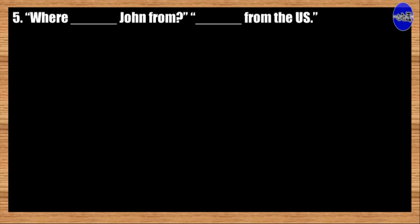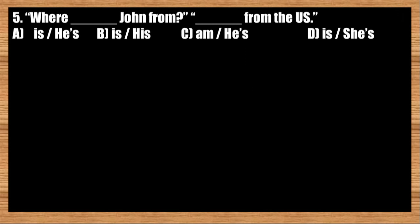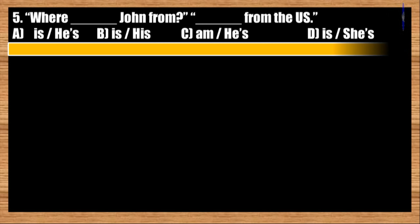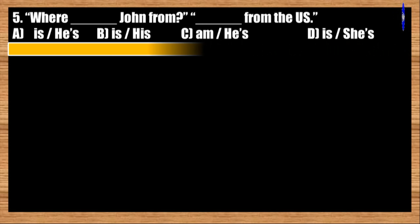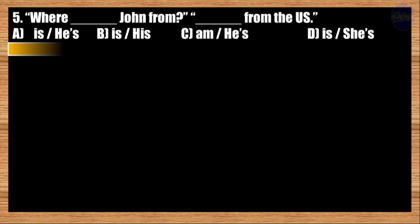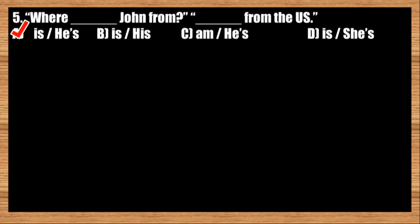Number five: Where blank John from? Blank blank the US. A: is, he is from; B: is, his; C: am, his; D: is, switch. The correct answer is option A. Where is John from? He is from the US.